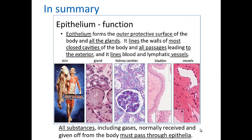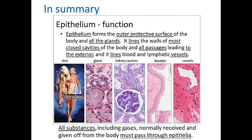In summary, epithelia has different functions: it forms the outer protective surface as the epidermis of the skin, forms glands, lines cavities, and also lines blood vessels. All substances including gases normally received or given off by the body must go through epithelia.